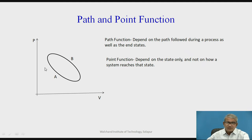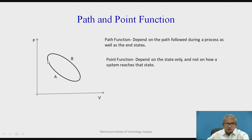Here it is one cycle — it is one loop. The graph I am showing: one of the process is here. Suppose the initial point is here, one process is 1A2 and 2B1. So, 1A2B1, it is one loop, that is called a cycle. So, it is called one process, one cycle.